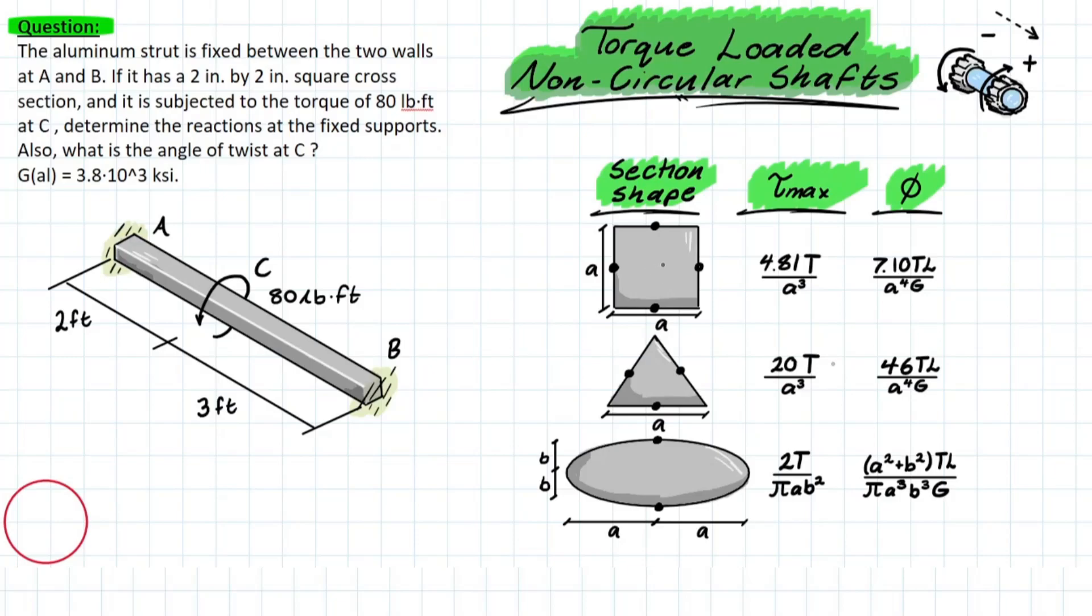What that also meant was that if we looked at the longitudinal axis, we would have zero stress developed at the center, which is where that longitudinal axis was. And as we went out to the furthest point on our exterior surface, we would develop a max shearing stress.